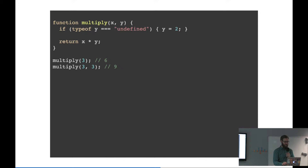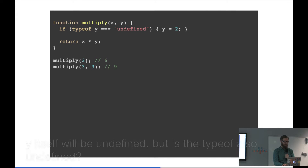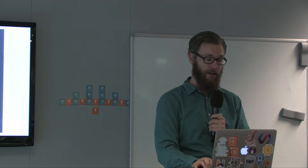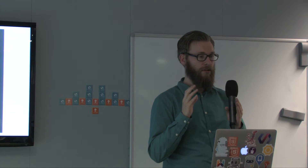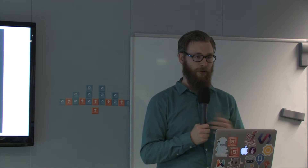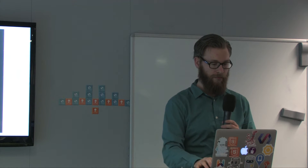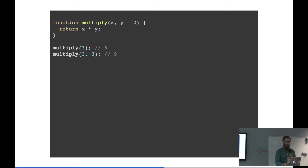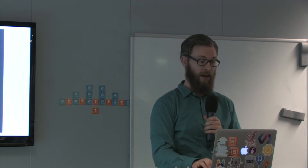In ECMAScript 6, you can just assign a default value to y. So y defaults to 2, then return x times y, and you get the same results — a lot cleaner and easier to read. Now, what if you have an addAll function which adds all the parameters you pass to it? If you do 3, 4, 6, it will be 13. If you do 21 and 21, it will be 42. In ECMAScript 5.1, you have to convert the arguments object to a real array using array.prototype.slice.call, and then add everything together with a for loop.